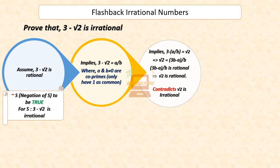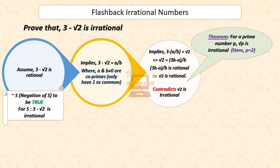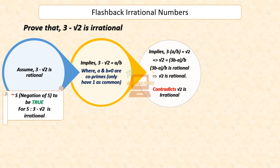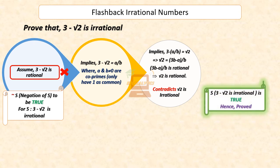But this contradicts the fact that square root of 2 is irrational, since we already know that the square root of a prime number is always irrational. Hence, our assumption that 3 minus square root of 2 is rational is incorrect. So, we can conclude that 3 minus square root of 2 is irrational.